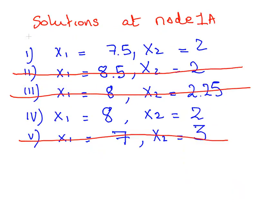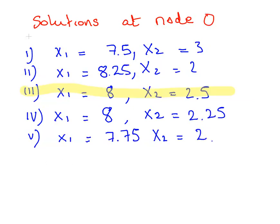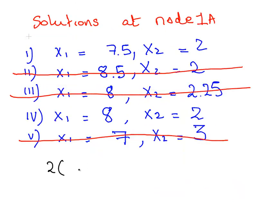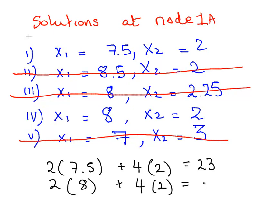Now what we're going to do is evaluate this constraint here, 2x1 plus 4x2 less than or equal to 25. So 2 times 7.5 plus 4 times 2, that's 15 plus 8, that's equal to 23. 2 times 8 plus 4 times 2, that's equal to 24. That's OK, that fits within our constraints.